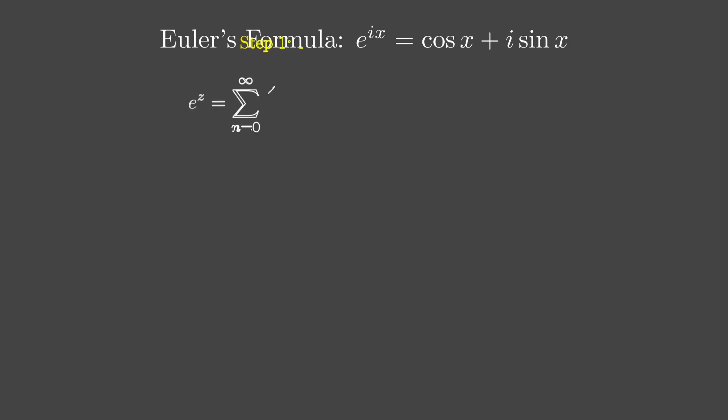Let's start by understanding where this formula comes from. Imagine the exponential function, e to the z. It's got this amazing infinite series representation, which is like a recipe for building it up. It looks like this: e to the z equals 1 plus z plus z squared over 2 plus z cubed over 3 plus z to the 4th over 4 plus dots. This is the Taylor series for the exponential function, and it works for any z. It's like stacking up infinitely many tiny pieces to get the full picture.